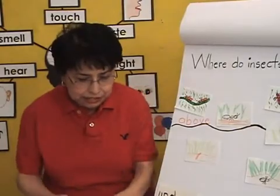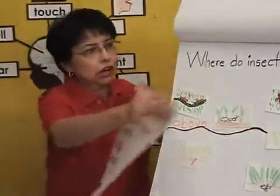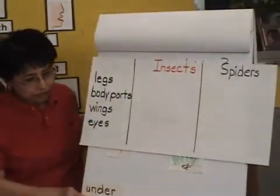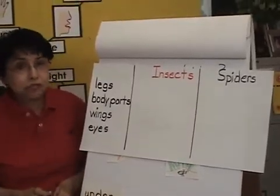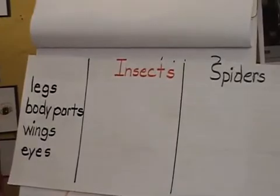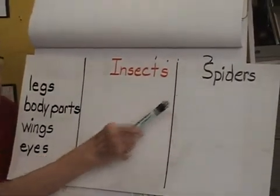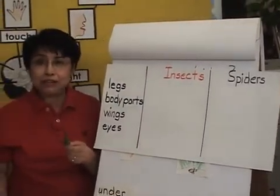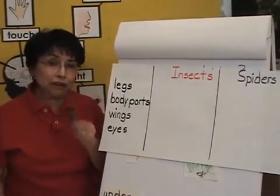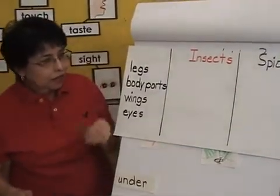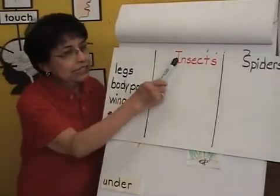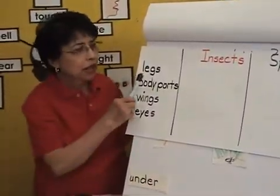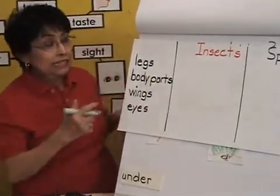After we finish our engagement, I'm going to put up a small chart and we're going to compare. This is a good way to compare with small children. We're going to look at insects, which they held in their hand, and we're going to look at spiders, which they also held in their hand. Most of the children will probably know what a spider is. How many legs does the insect have? Whether you had a bumblebee, a ladybug, or a grasshopper — how many legs does an insect have?